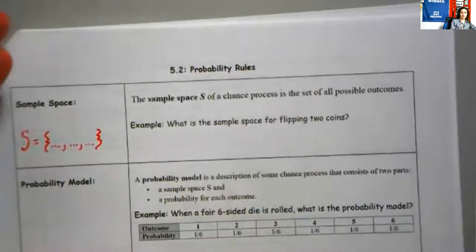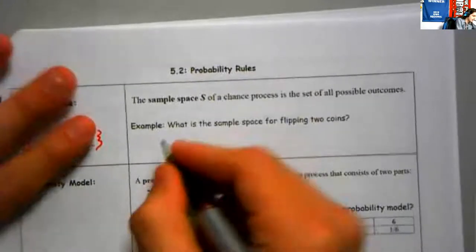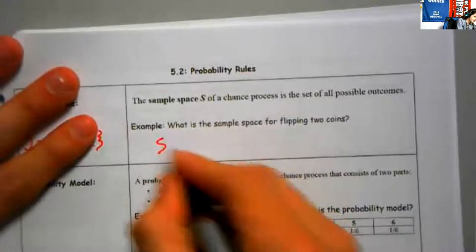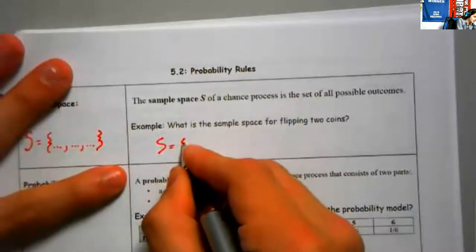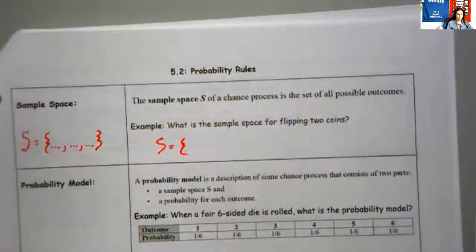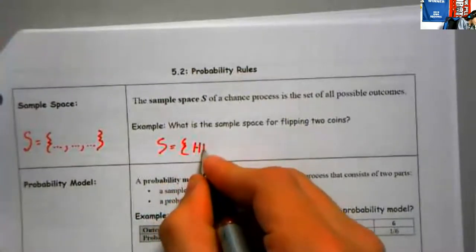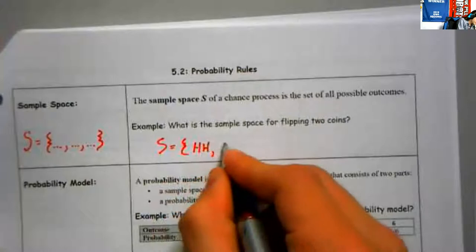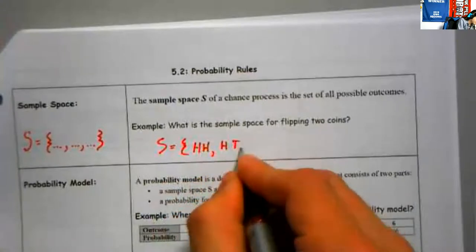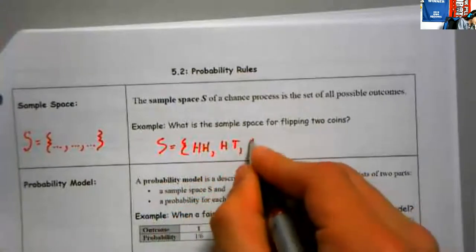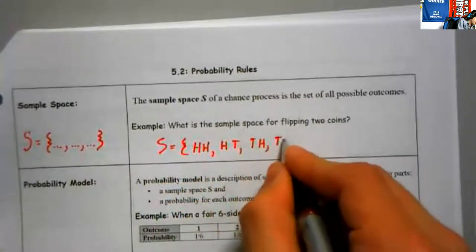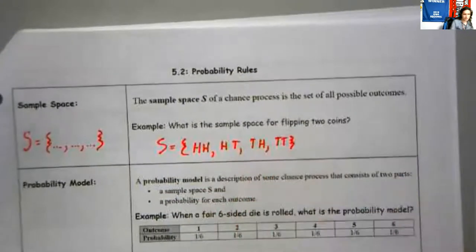So what is the sample space for flipping two coins? What are the outcomes when you flip two coins — what are the ways that could turn out for you? Well, you could get two heads, you could get a head and a tail, you could get a tail and a head, or you could get a tail and a tail.